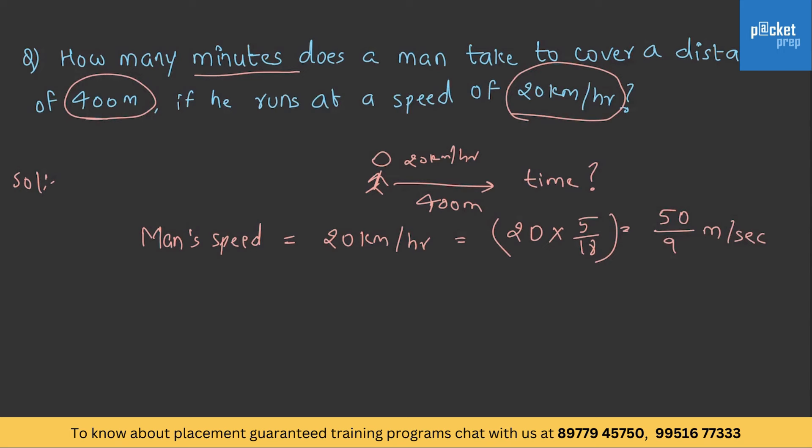Now, time taken. How can we calculate the time taken? We already know the formula. Time is equal to distance by speed, and therefore, it is 400 into 9 by 50 and its units are seconds.